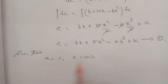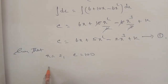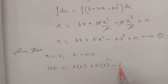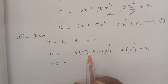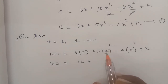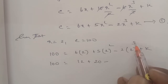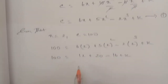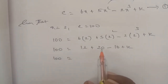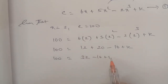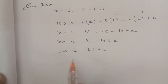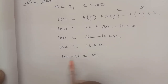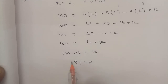Substituting x equals 2 and C equals 100: 100 equals 6 times 2 plus 5 times 2 square minus 2 times 2 cube plus k. That is 100 equals 12 plus 20 minus 16 plus k, which gives 100 equals 16 plus k. Therefore k equals 100 minus 16, that is k equals 84.